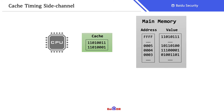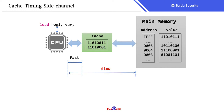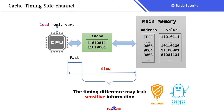Cache is a high-speed storage between the CPU and the main memory. If we ask the CPU to read a variable, it will first query the cache. If the data is already in cache, the read operation will be very fast. If the data is not in cache, the query will go to the main memory, which needs much more time, and such timing difference might leak sensitive information.